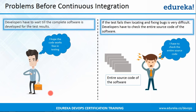The second problem is: since the entire source code of the application is first built and then tested, if there's any bug in the code, developers have to go through the entire source code of the application. As you can see there is a frustrated developer because he has written code for an application which was built successfully but in testing there were certain bugs. So he has to check the entire source code in order to remove that bug, which takes a lot of time. Basically, locating and fixing of bugs was very time-consuming.